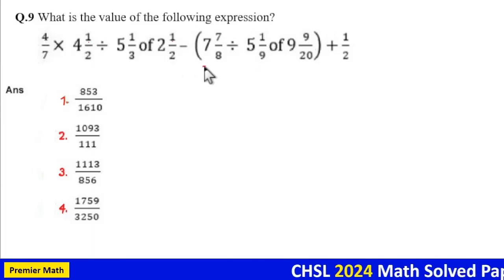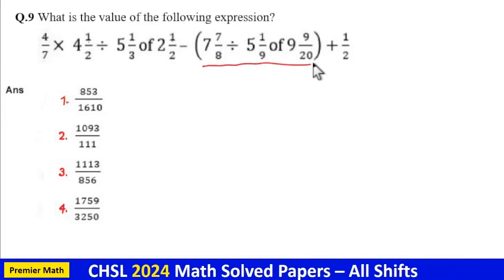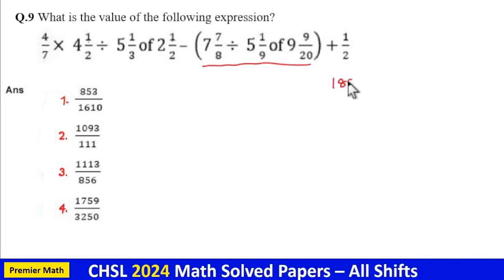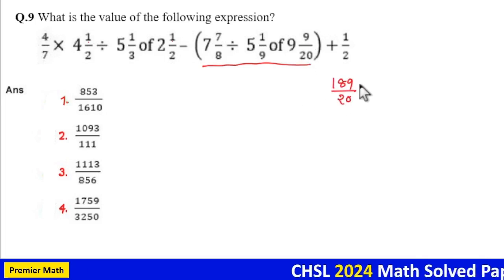What is the value of the following expression? Here solve this bracket first. 9 into 20, 180, 180 plus 9, 189. So this is equal to 189 by 20.